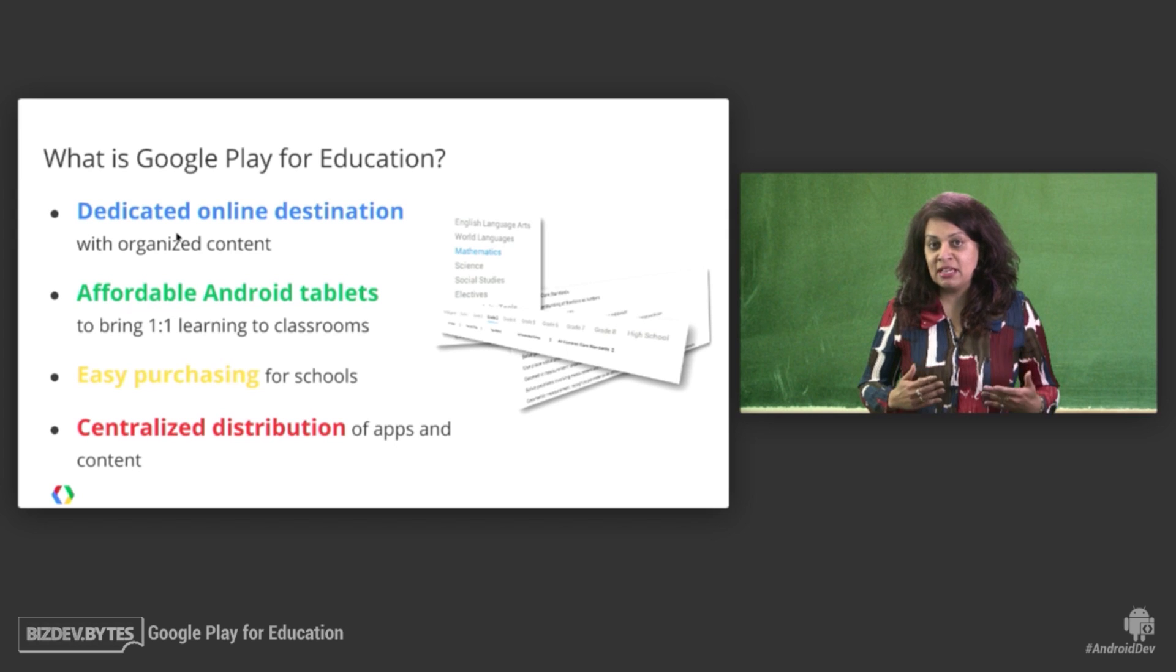It includes tablets that are priced affordably because we want to bring that promise of one-to-one learning into the classroom. It includes easy purchasing options for schools. So for example, a teacher can purchase an app and try it for free. They can do bulk purchasing. They can also use purchase orders instead of credit cards, since at a school you don't have credit cards.